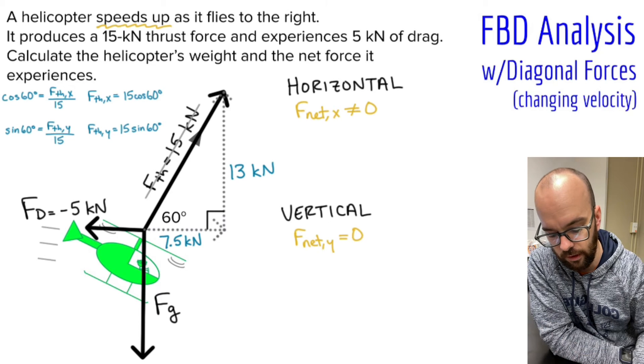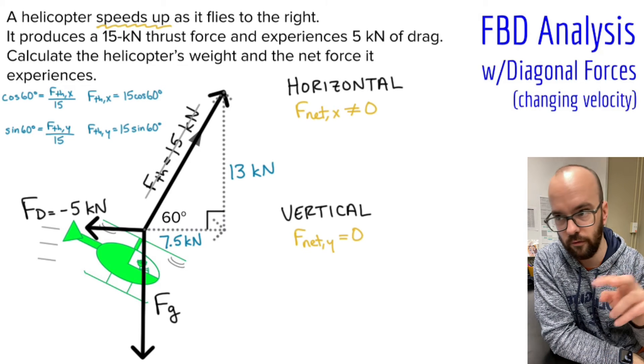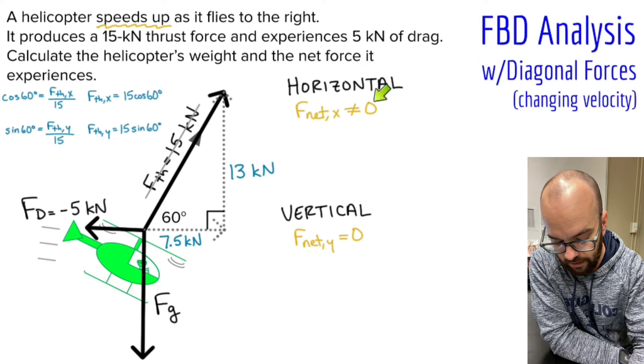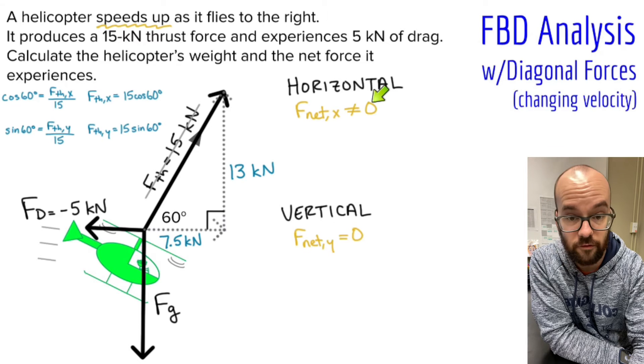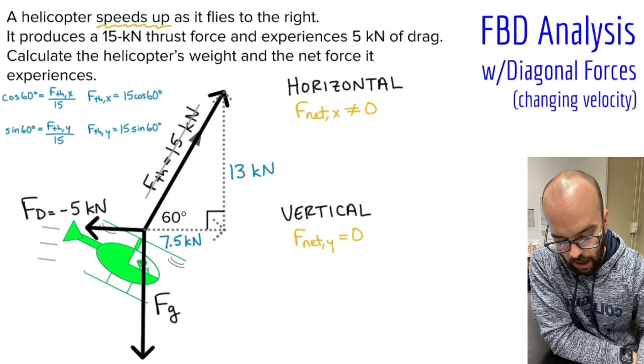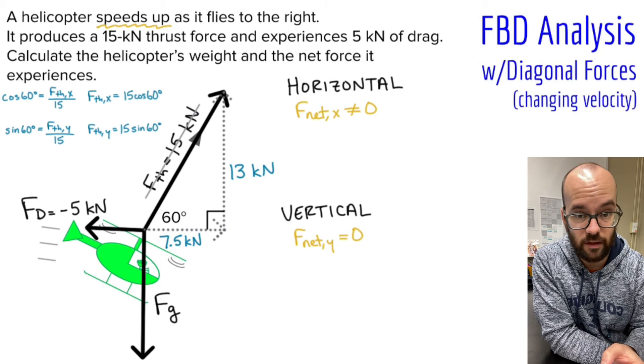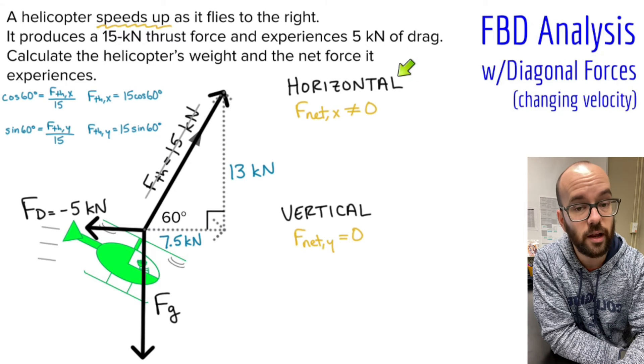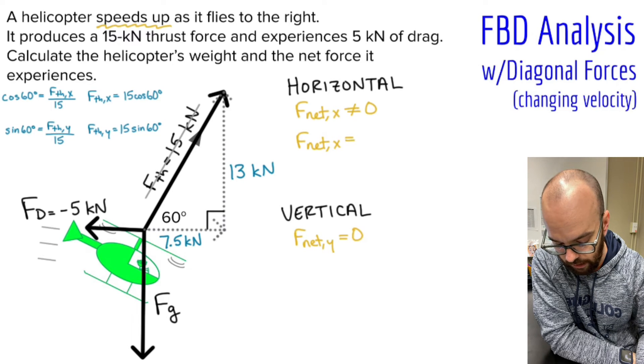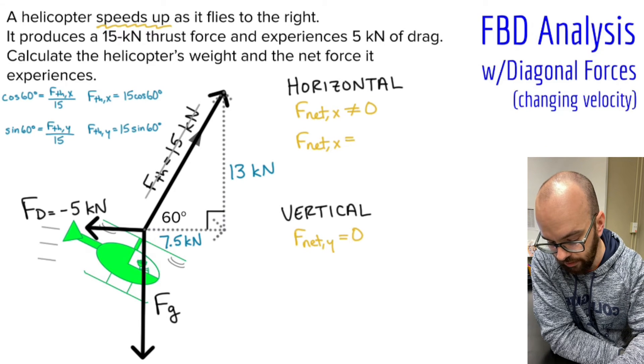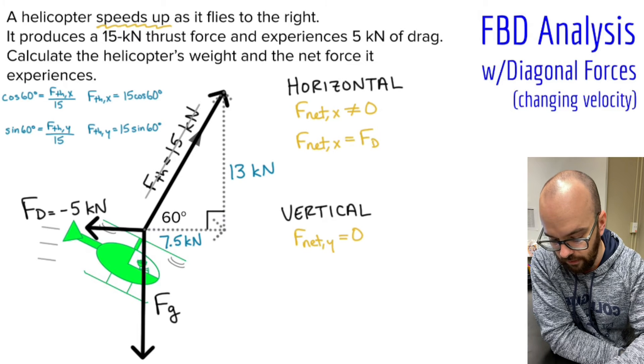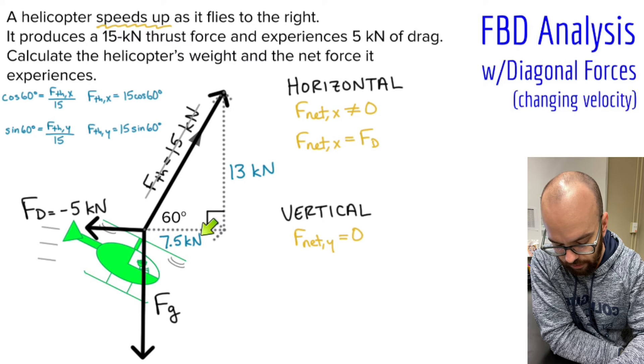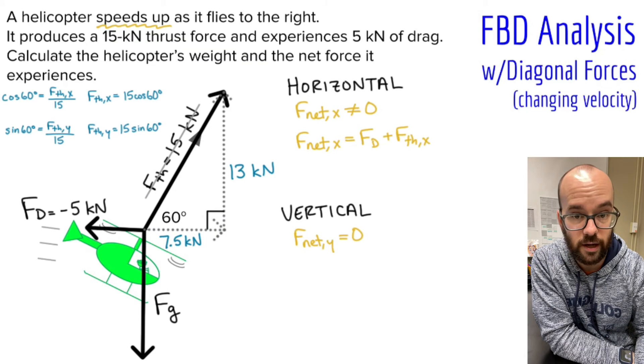Now let's jump back up to the horizontal, and I could do these in either order. I know the Fnet is not zero, so I'm going to solve for what that Fnet horizontally would be. I know that my Fnet is what I get when I add the forces together. But remember, I'm just looking horizontally right now, so I'm not going to add all the forces. I'm just going to add the horizontal forces. So Fnet in the X direction, or horizontal direction, equals—well, I've got two forces here. I've got the force of drag, which is horizontal, and I have the horizontal component of my thrust, which is FTHx.